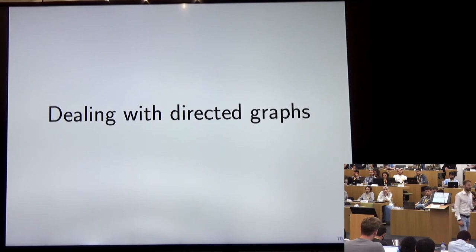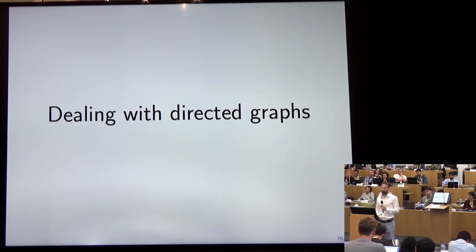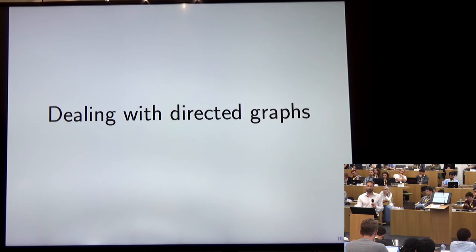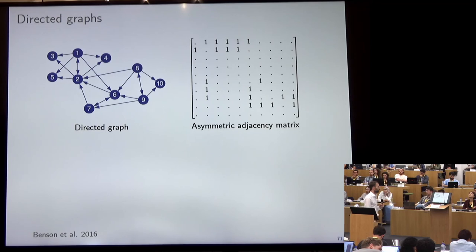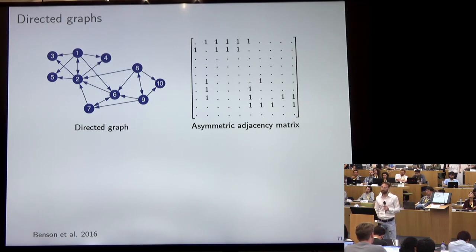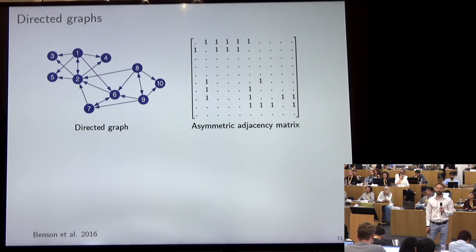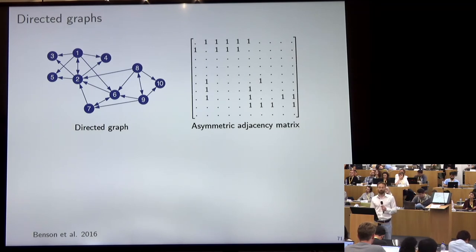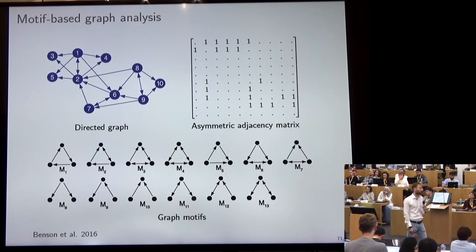Finally, let's talk briefly about directed graphs. We've assumed undirected graphs for the spectral construction to work. If we depart from spectral constructions, handling directed graphs is not a big deal — you can actually handle any kind of graph. One way to deal with directed graphs is to convert them into undirected but differently weighted graphs by looking at subgraph structures called motifs or graphlets.